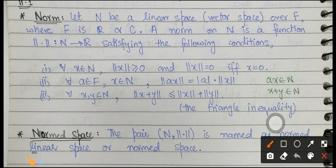The first condition is: for all x belonging to N, the norm of x should be greater than or equal to 0, and norm of x equals 0 if and only if x equals 0. The second condition is: for all a belonging to F and x belonging to N, norm of ax equals |a| · norm of x. We use |a| because on ℝ and ℂ the usual norm is the modulus.